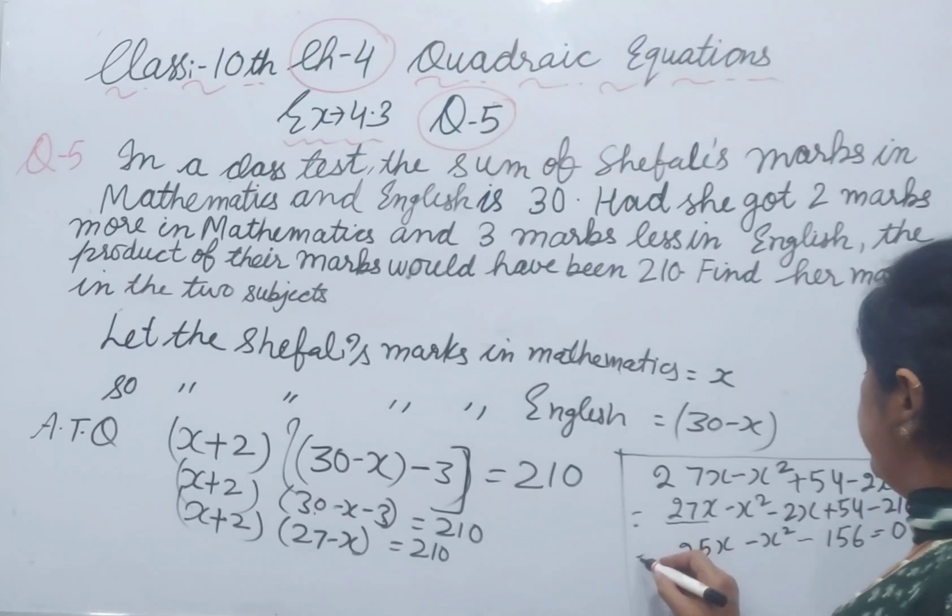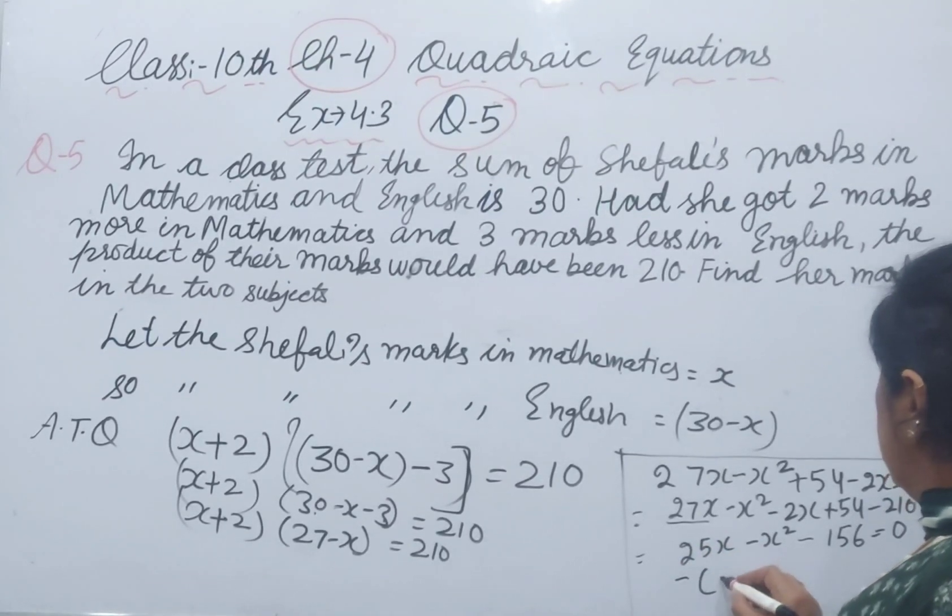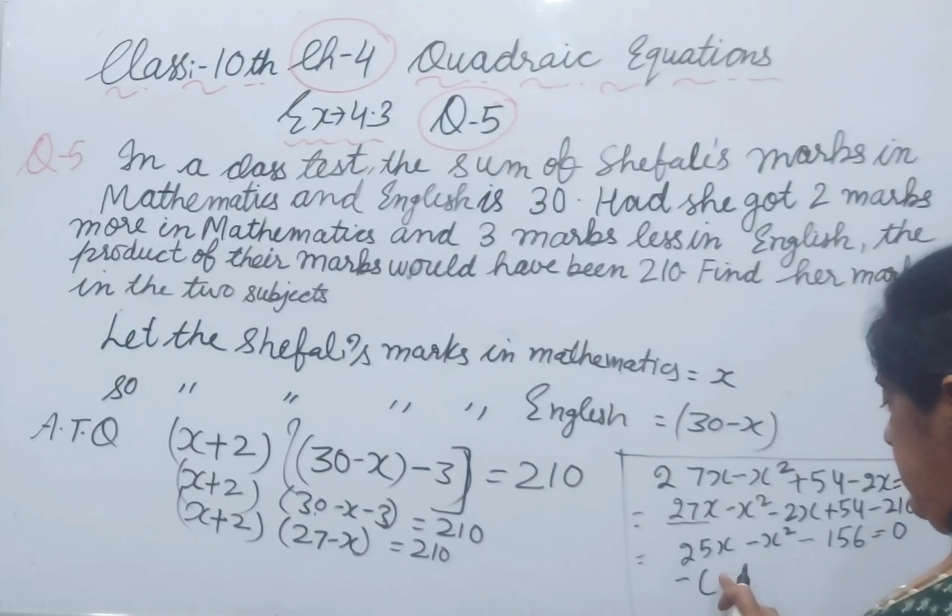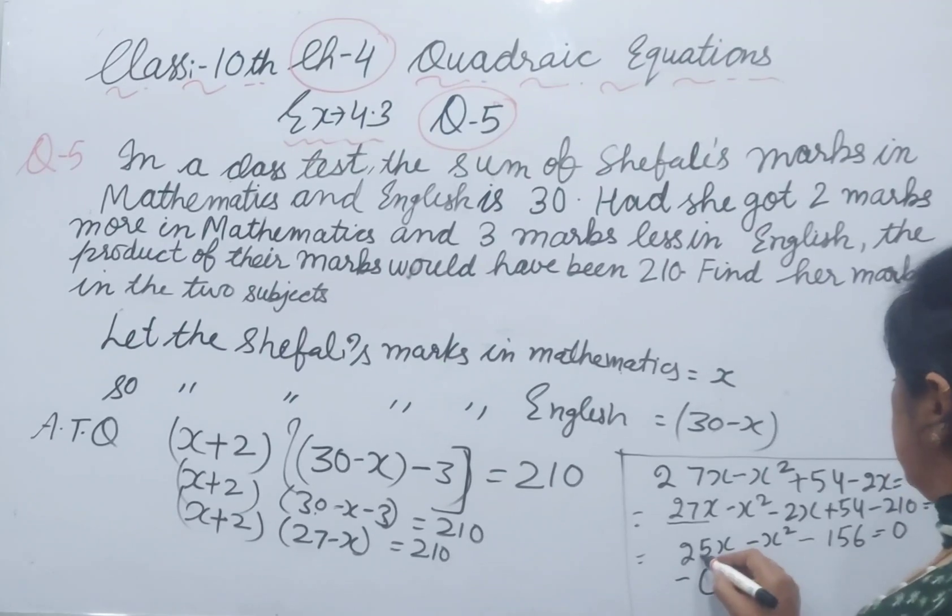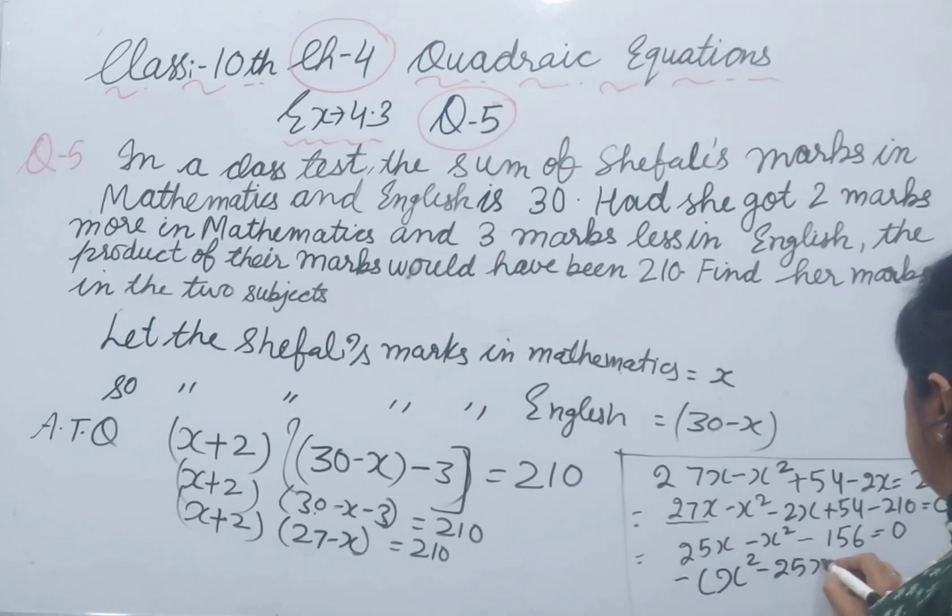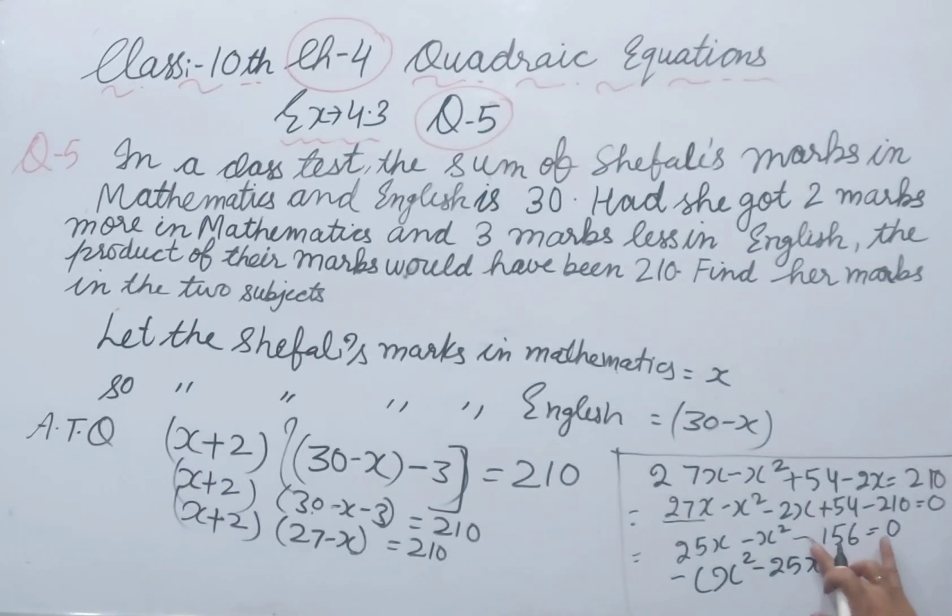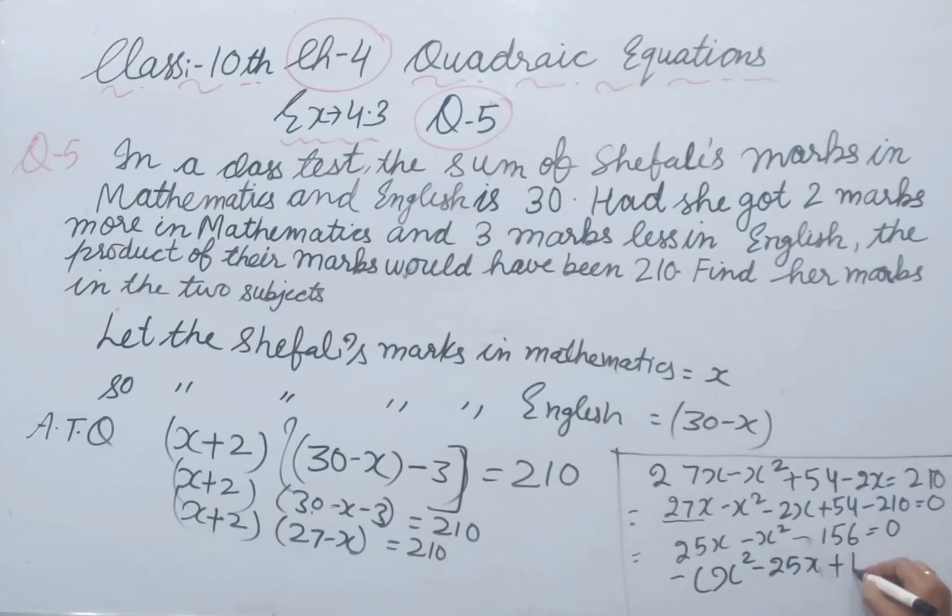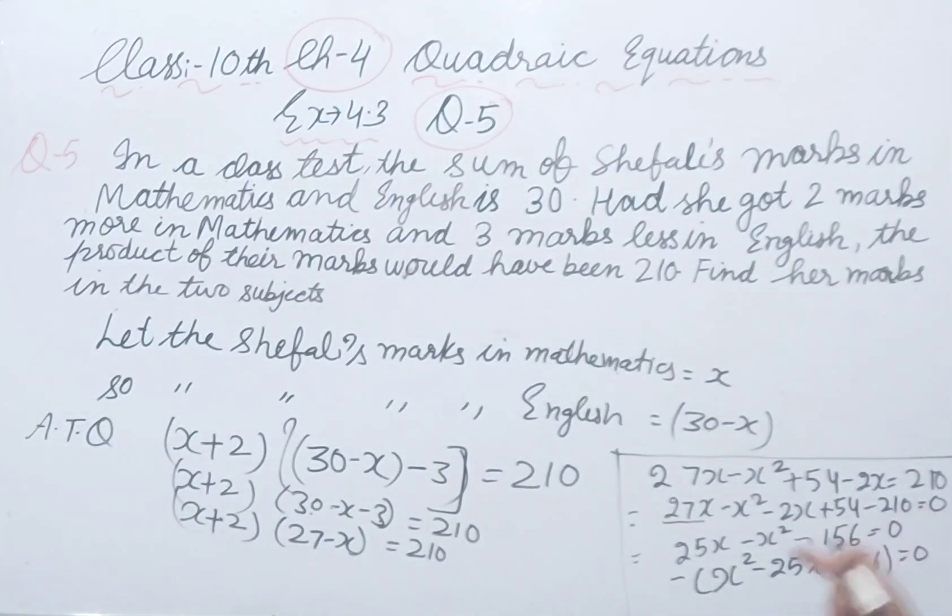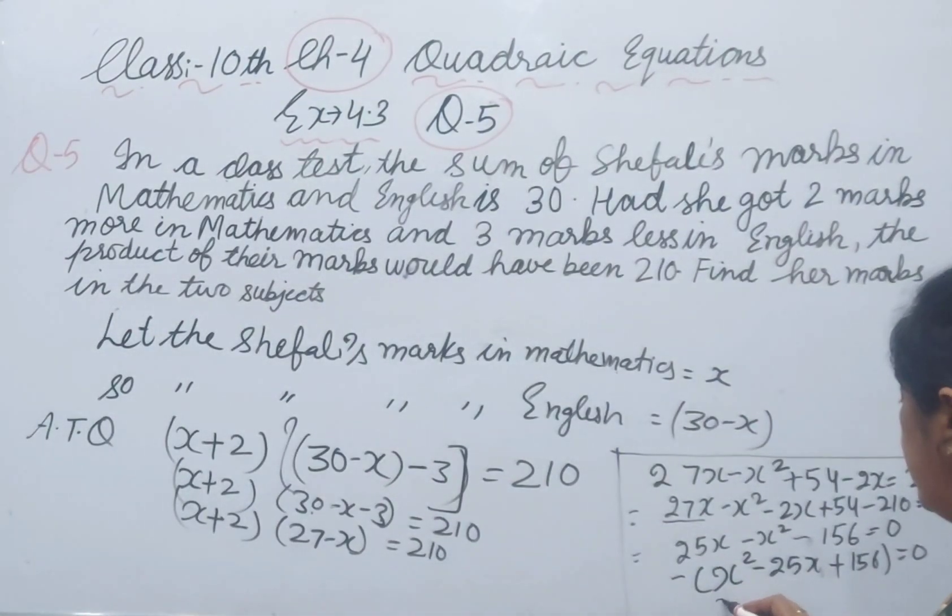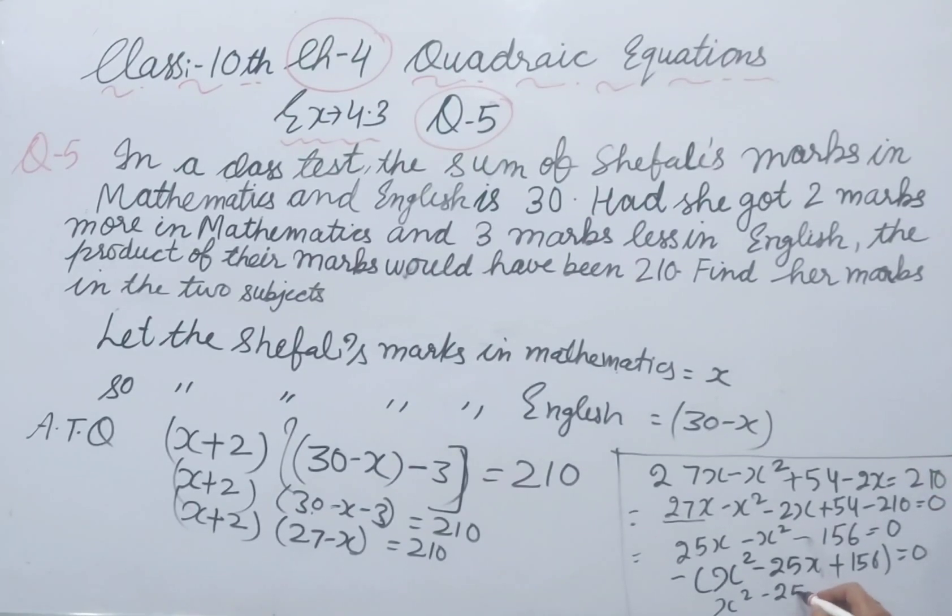Take minus sign as common. Put x in first position because the power is 2. The minus changes to plus, plus changes to minus. This minus 156 becomes plus 156. The minus sign divided by 0 cancels, and we get x squared minus 25x plus 156 equals 0.